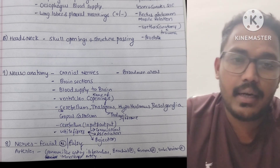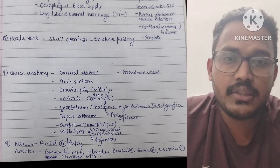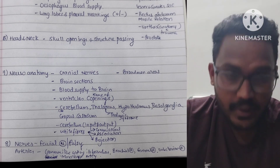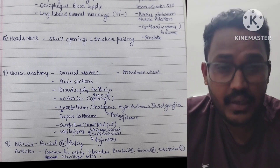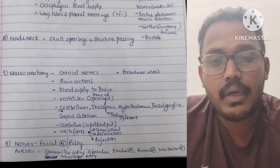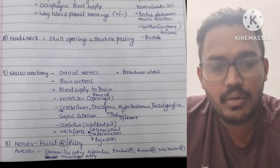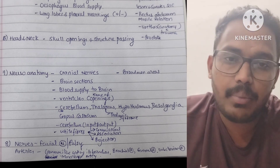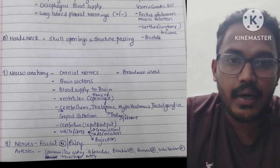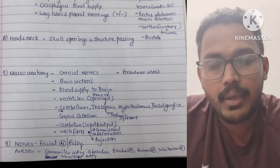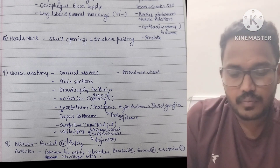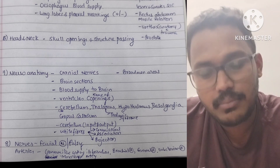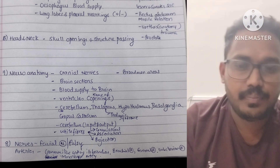Important nerves and arteries: the facial nerve and its palsy are important. Key arteries include the common iliac artery and its branches, brachial artery, femoral artery, subclavian artery, and maxillary artery. In anatomy overall, anatomical diagrams, sections, and orientation are very important.